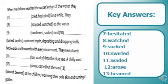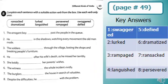They tentatively ran into the blue sea. Number three: A chilly wind arose, but the sun beamed at the children, warming their pale skin and turning it golden. Key answers are also mentioned for more understanding.